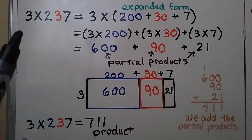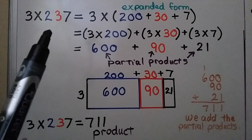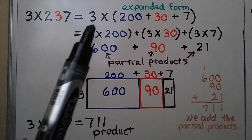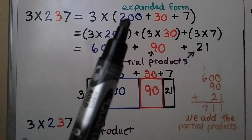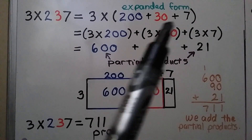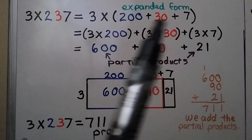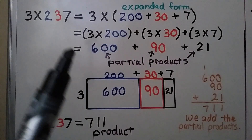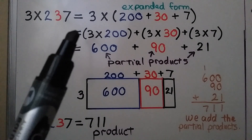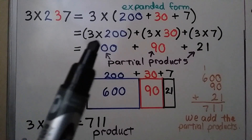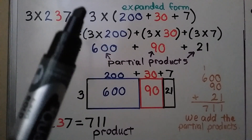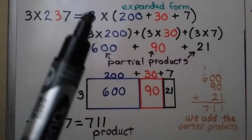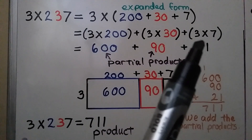We have 3 times 237. We write 3 times, then 237 in expanded form: 200 plus 30 plus 7. We can use the distributive property to multiply 3 times 200, 3 times 30, and 3 times 7.